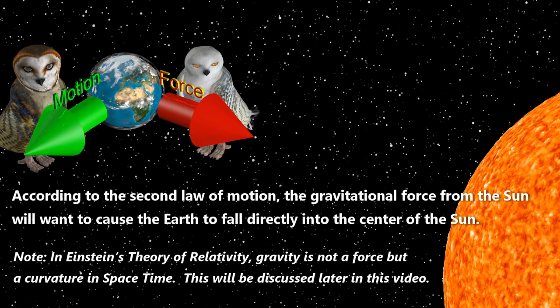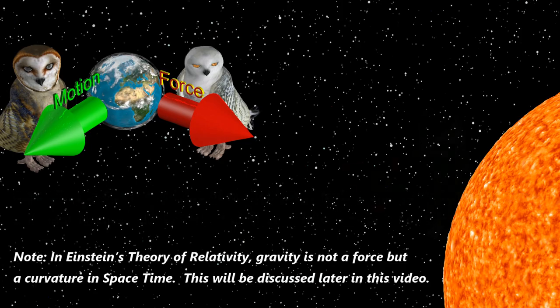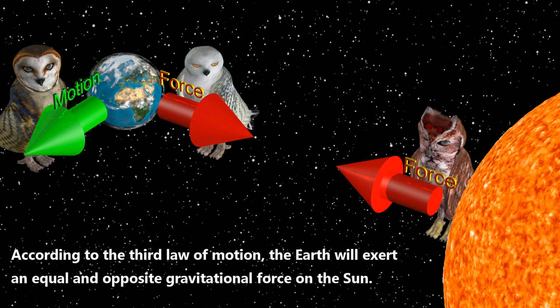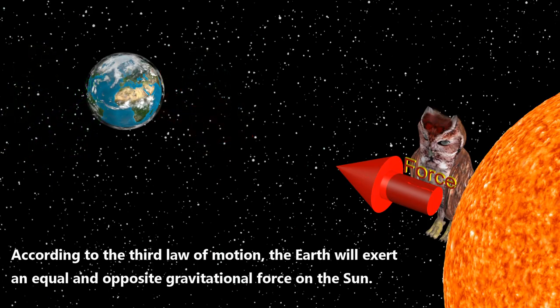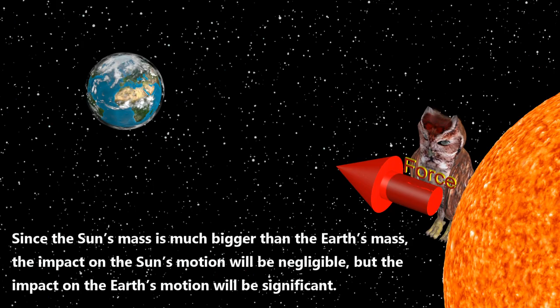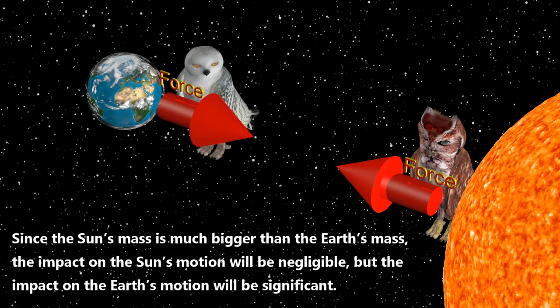In Einstein's theory of relativity, gravity is not a force but a curvature in space-time. This will be discussed later in this video. According to the third law of motion, the Earth will exert an equal and opposite gravitational force on the Sun. Since the Sun's mass is much bigger than the Earth's mass, the impact on the Sun's motion will be negligible, but the impact on the Earth's motion will be significant.